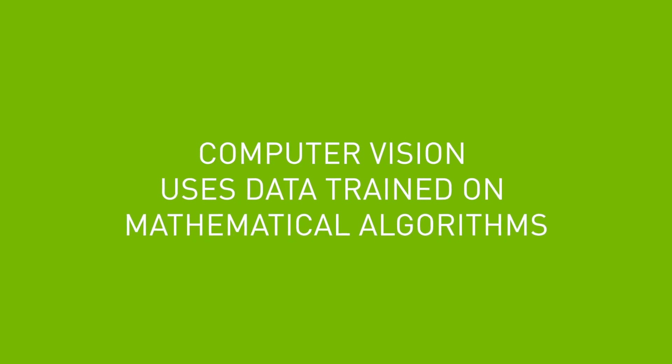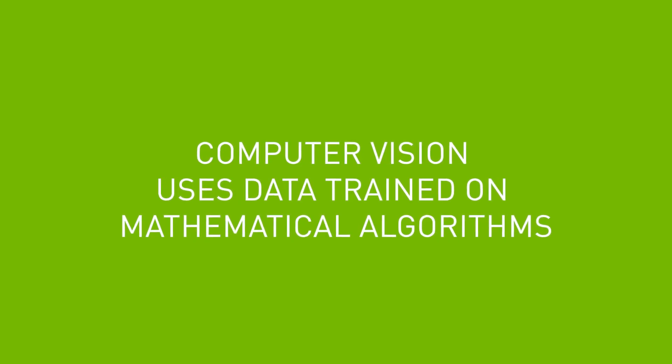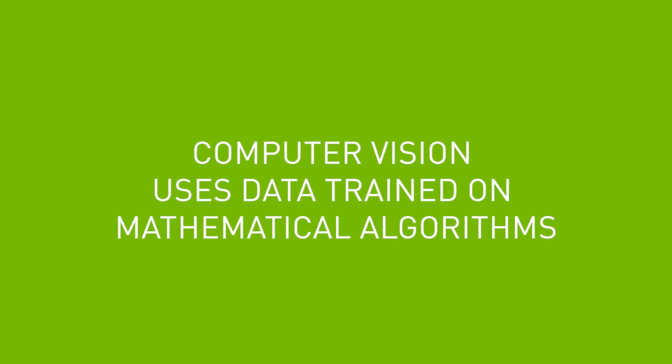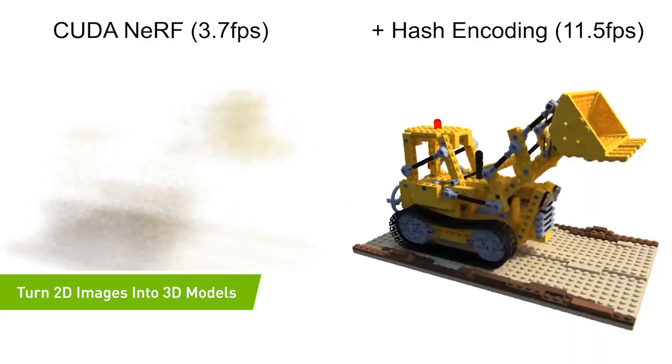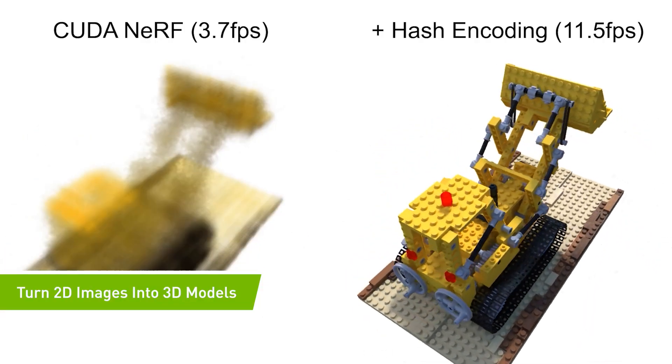Computer Vision uses data trained on mathematical algorithms to analyze, interpret, and process images in video.